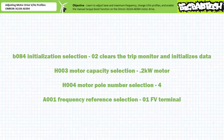We'll initialize the drive to a default state and clear any errors using the initialization and protection parameter B084. Then we'll program it to recognize a 200 watt motor with a nominal rotational speed of 1800 rpm using the motor settings parameters H003 and H004. Finally, we'll program the drive to recognize an external speed potentiometer input using extended function parameter A001.